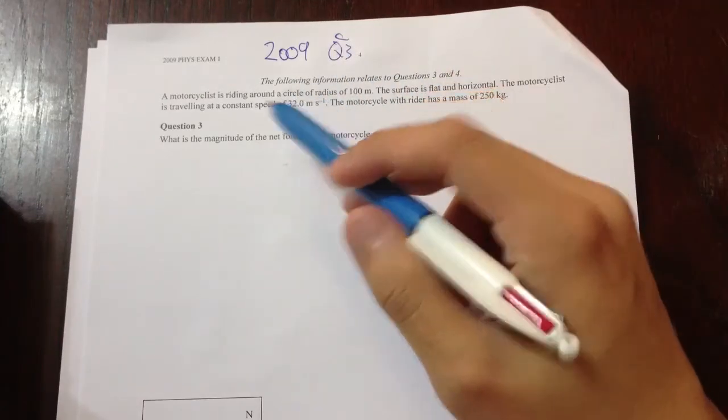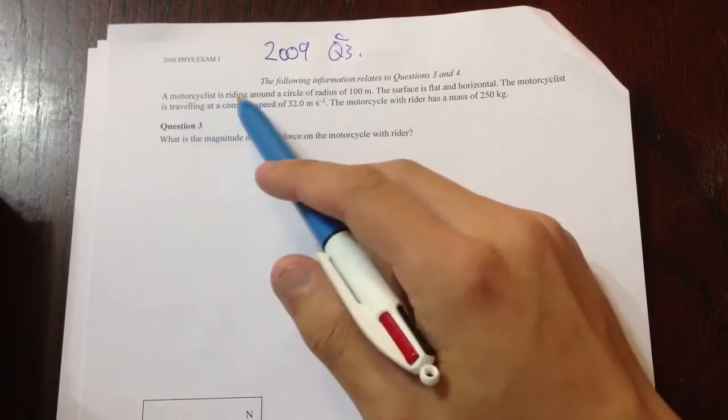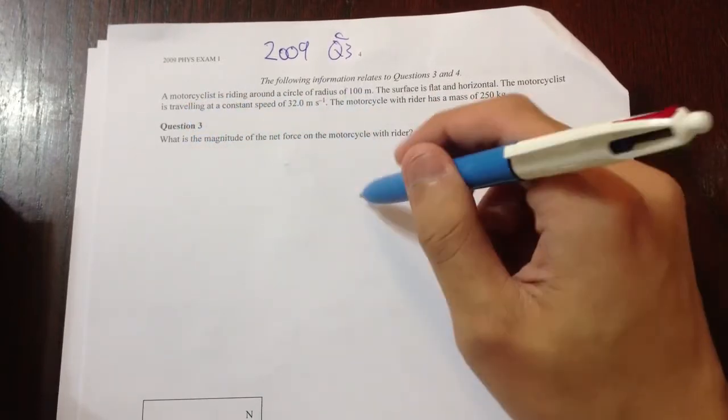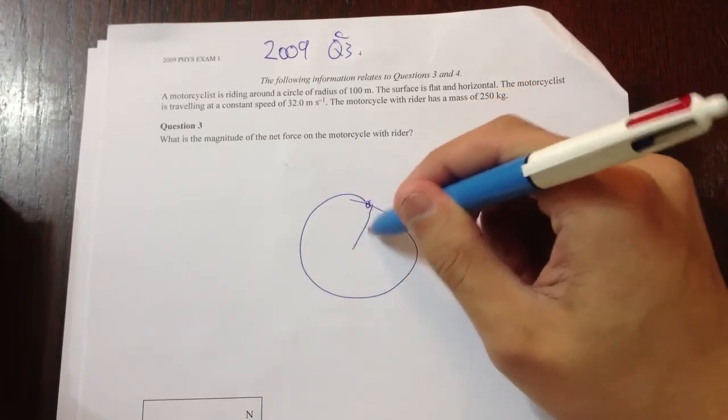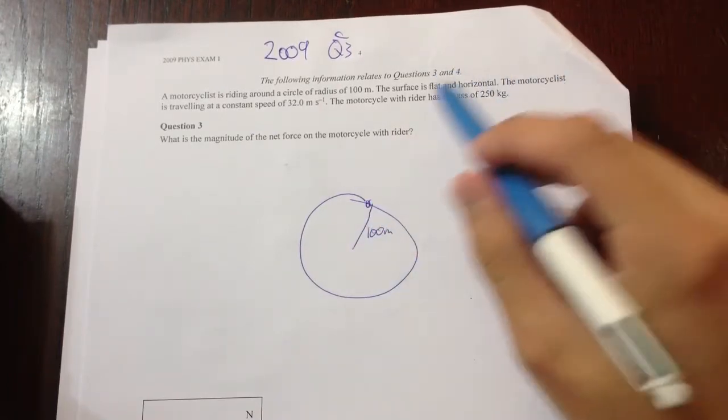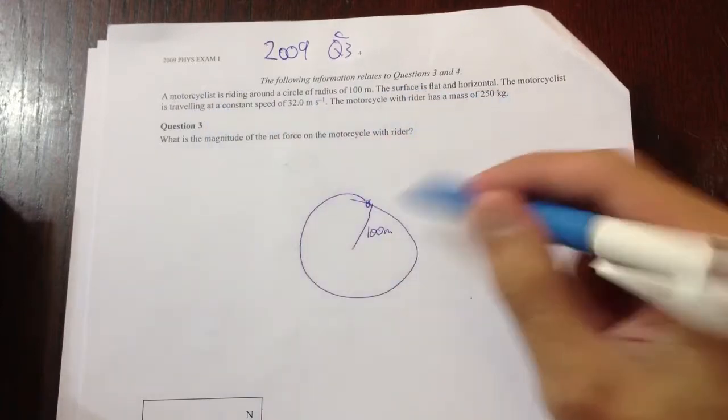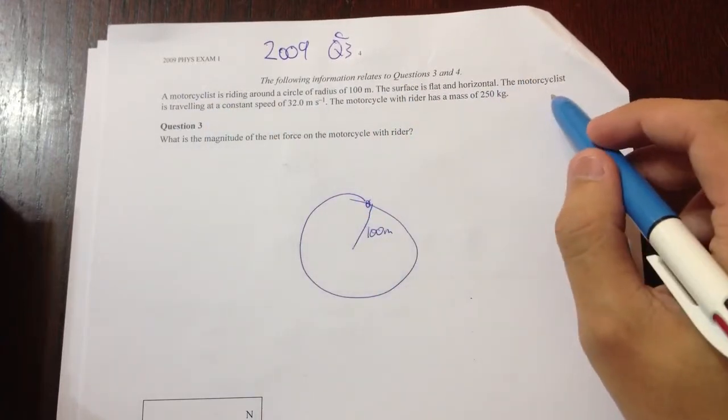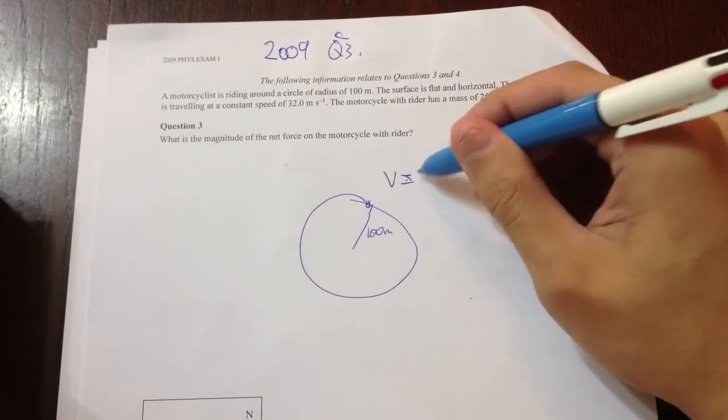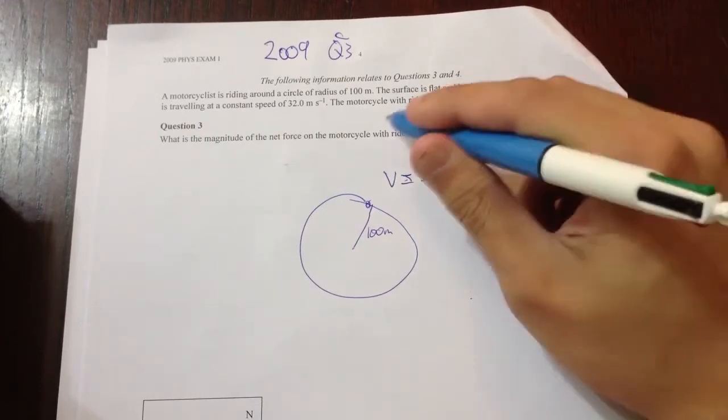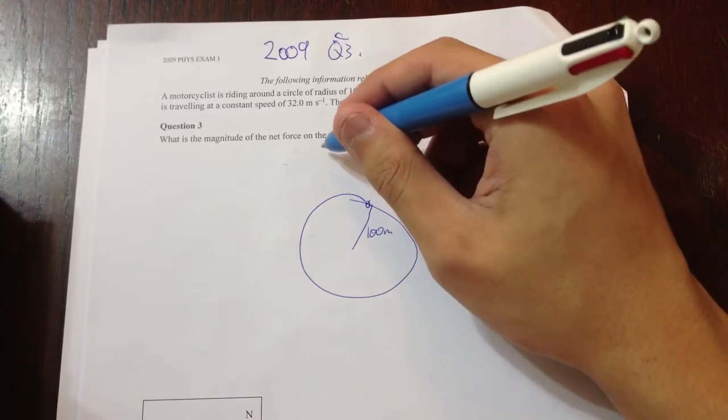Ok, so what's important is a motorcyclist traveling around a circle of radius 100 meters. The surface is flat and horizontal, so that means there's no incline. So that's not important. The motorcyclist is traveling at a speed V equals 32 meters per second. The motorcyclist and rider has a mass of 250 kilograms.